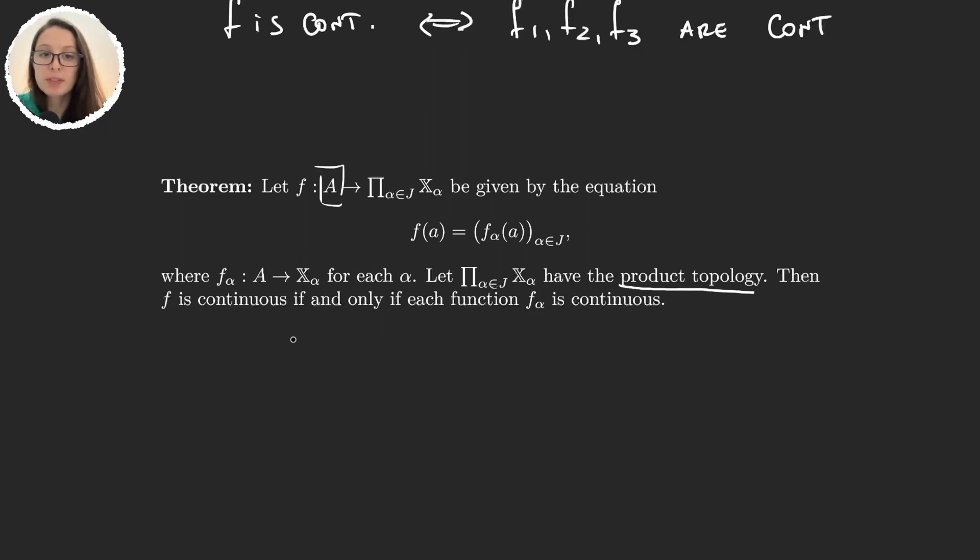And we give our product space the product topology. So what we have here is that f is continuous if and only if each of the coordinate functions is continuous. Let's first work on the proof for this theorem, and then let's see why it is not saying box topology.